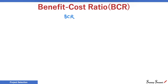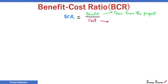Benefit-Cost Ratio, as the name implies, is the ratio of benefit to cost. Benefit is the gain from the project — the cash inflows. Cost refers to the investments made for the project — the cash outflows.